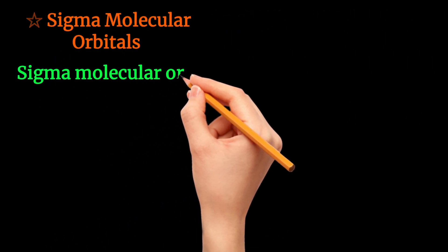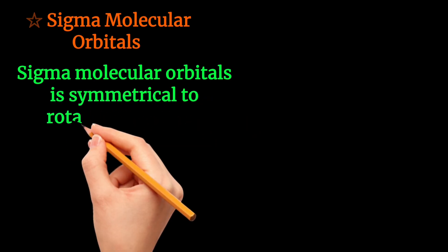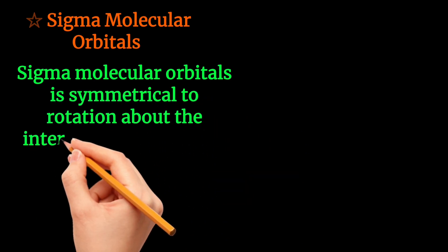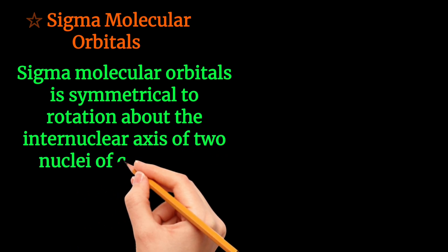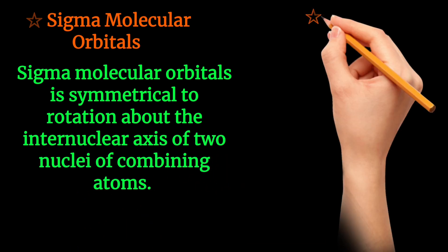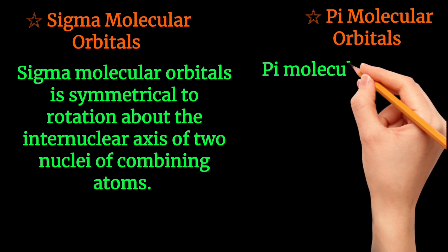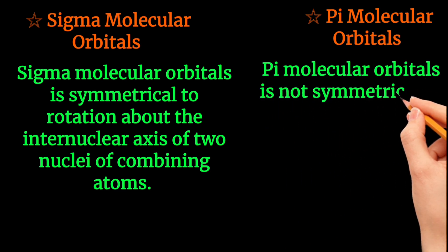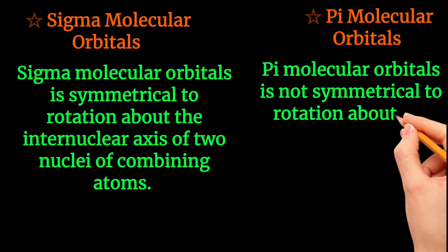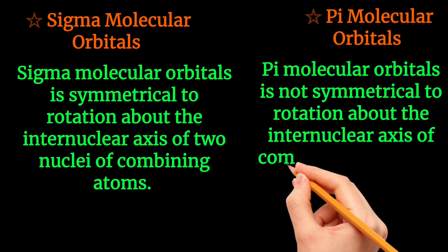Next, sigma molecular orbitals are symmetrical to the rotation about the internuclear axis of the combining atoms, while pi molecular orbitals are not symmetrical to the rotation about the internuclear axis of the combining atoms.